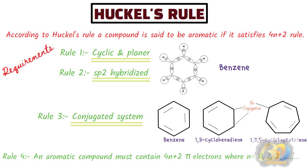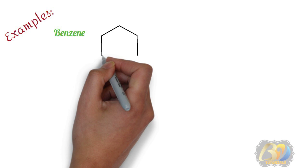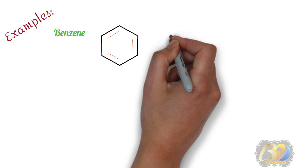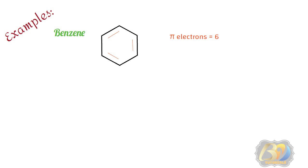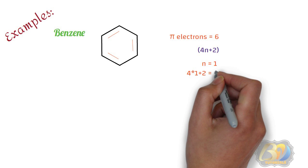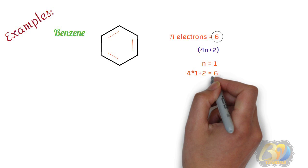Let's take some examples. The first example is benzene. Benzene is cyclic and planar, all ring carbon atoms are sp2 hybridized, and it contains alternate single and double bonds. Benzene contains 3 pi bonds; since one pi bond contains 2 electrons, benzene has 6 pi electrons. For 4n+2 with n=1: 4×1+2 = 6. The number of pi electrons equals 4n+2. Hence, benzene is aromatic.